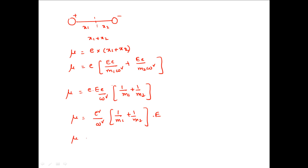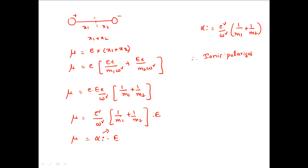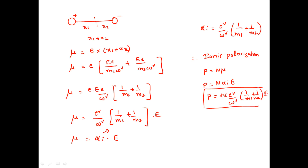Comparing this with μ = α_i · E, the ionic polarizability value is α_i = e²/ω² · (1/M1 + 1/M2). The ionic polarization P = n·μ = n·α_i·E, which gives P = n · (e²/ω²) · (1/M1 + 1/M2) · E. This is the expression for the ionic polarization value.